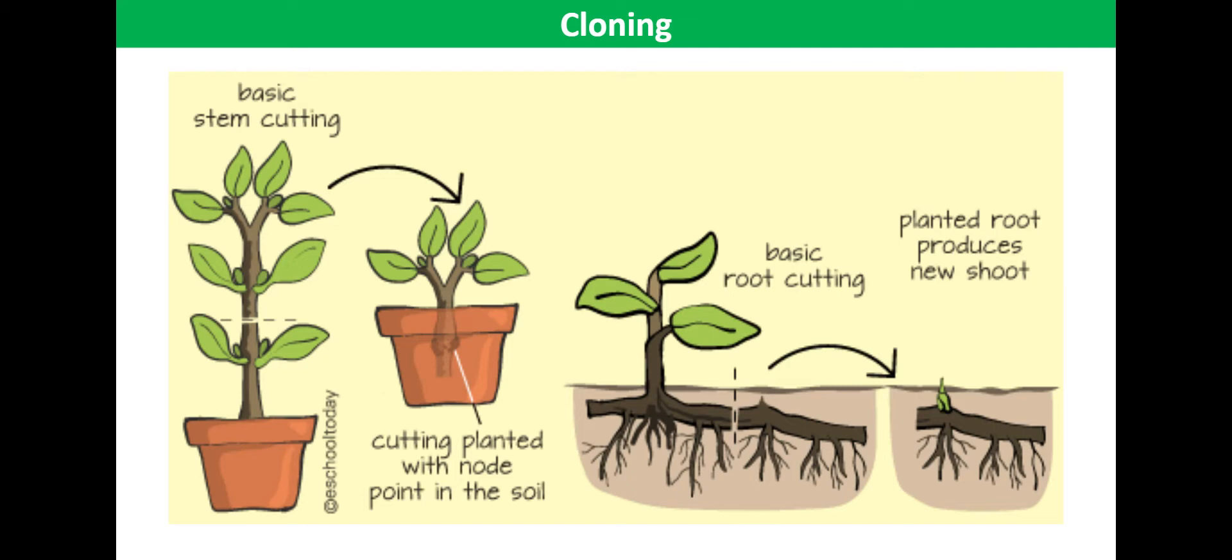Cuttings can also be made successfully from other parts of the plant. For example, root cuttings in which a section of roots is buried just below the soil surface and produces new shoots.